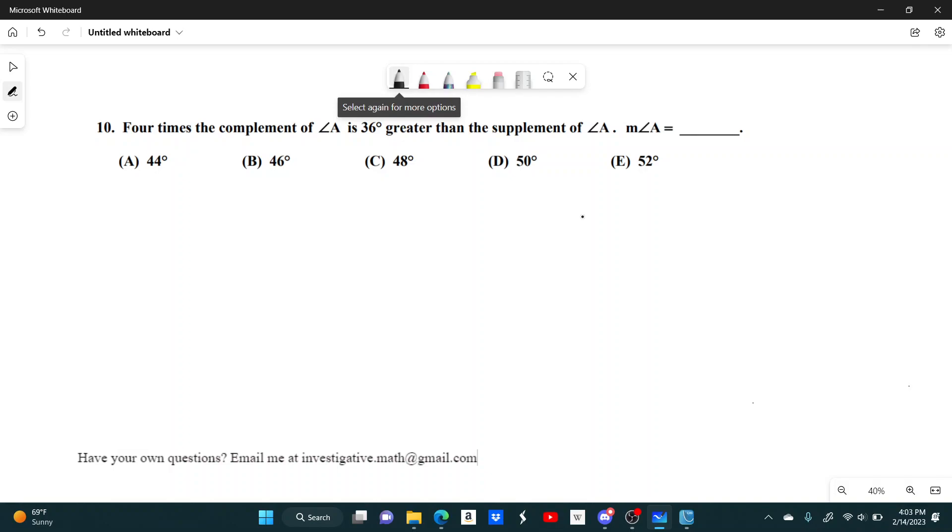So four times the complement, the complement just means 90 minus whatever this angle is. So four times the complement would be four times 90 minus A is 36 greater than the supplement of A.